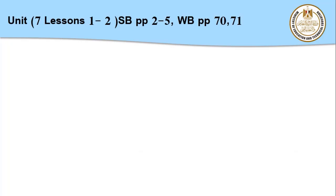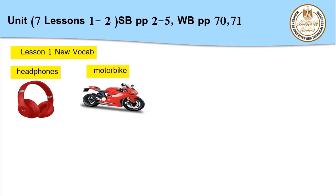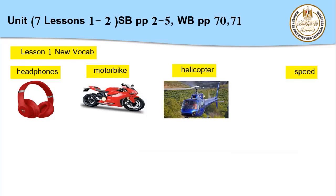Bismillah, let's start. In Unit 7, Lessons 1 and 2, today we are taking Students Book Pages 2 to 5 and Workbook Pages 70 and 71. Our first new words start with 'headphones' — سماعات الأذن. Motorbike — الدراجة النارية. Helicopter, or Chopper — الطائرة helicopter. These three, along with hundreds of other things, are called 'inventions' — الاختراعات. They also fall under 'Technology,' because our unit is called Technology and the Future — التكنولوجيا والمستقبل.